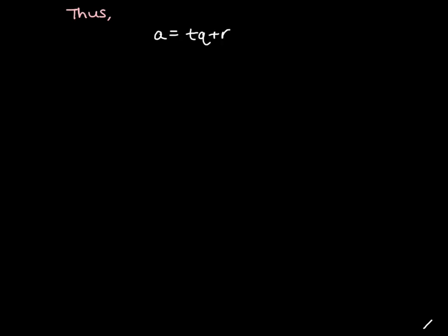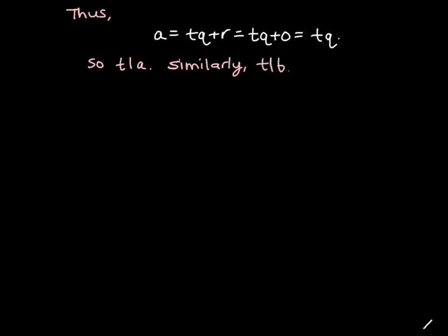So this means we get the following equation. We get that a equals tq plus r, but r equals zero. So a equals tq, which means that t divides a. We found this least element of our set S, and now we set out to show that t is the GCD of a and b. We first showed it's a common divisor — t divides a — and then by the exact same argument, similarly, we get that t divides b. So t is a common divisor of a and b.